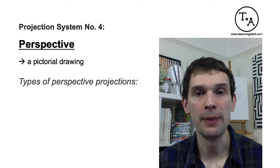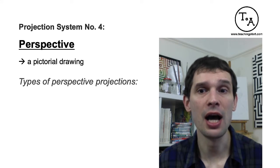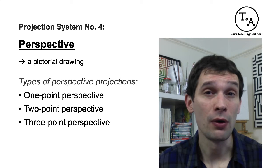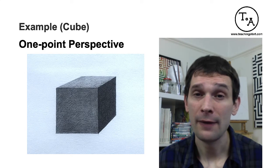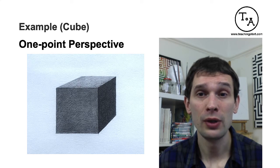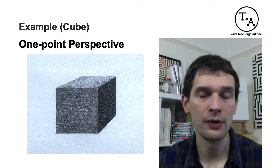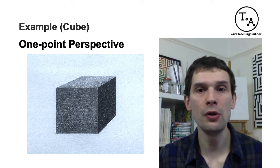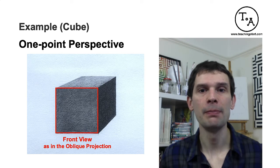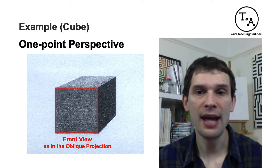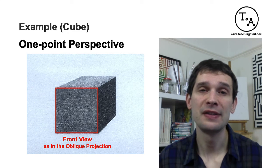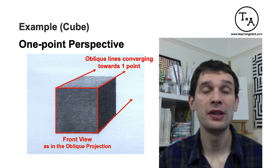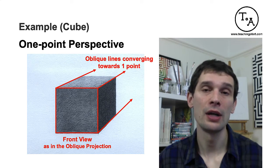There are three main types of perspective projections: one-point perspective, two-point perspective, and three-point perspective. In one-point perspective, it is very similar to the elevation oblique projection because again you will see the whole front view. In the case of a cube, you will see a square — but then the oblique lines going backwards that create depth are no longer parallel. Instead, they all go to one point called a vanishing point on the horizon, and because these edges go to one point, that's why it's called one-point perspective.